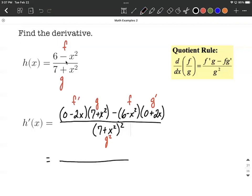So the cleaning up that I would do before I give a final answer would be 0 minus 2x makes negative 2x times 7 plus x squared minus 6 minus x squared. And then 0 plus 2x, I would leave a 2x out here.